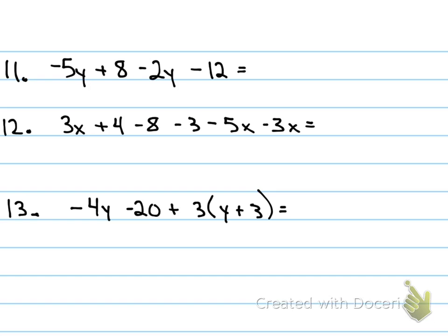Okay, number 11, I need to combine my like terms. You can do this mental math, okay, this part. You do not necessarily have to show work. So I see people pumping their fists because they're excited. That's fine, okay, but be careful. Make sure you don't make a mental math error. Negative 5 minus 2 is what? Negative 7Y. Very good. And then 8 minus 12 is negative 4.